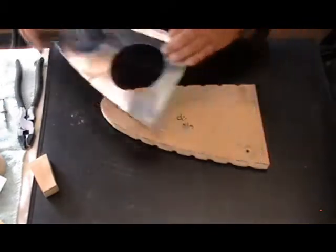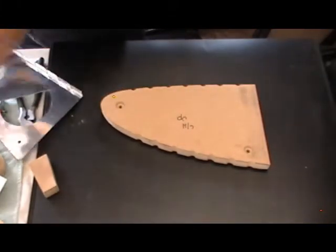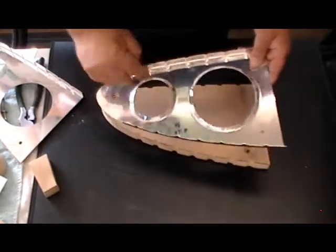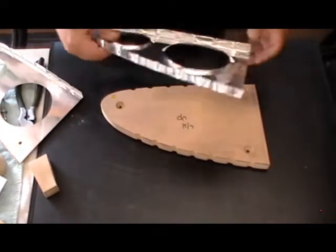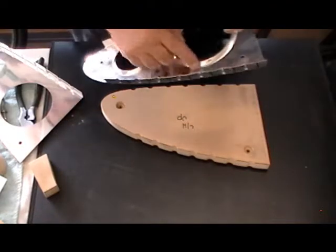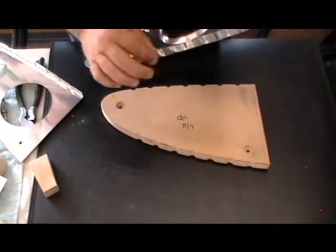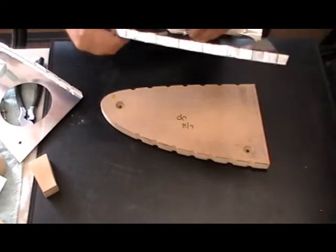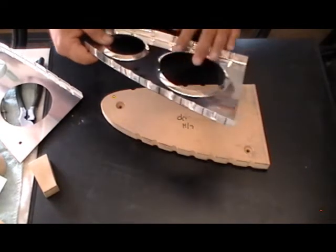So now the next thing we need to do is we need to put the flange on these lightning holes. And the reason we're doing all this, for those who don't know, is that these flanges, even the flutes, they all, because of the shape that they are in the metal...